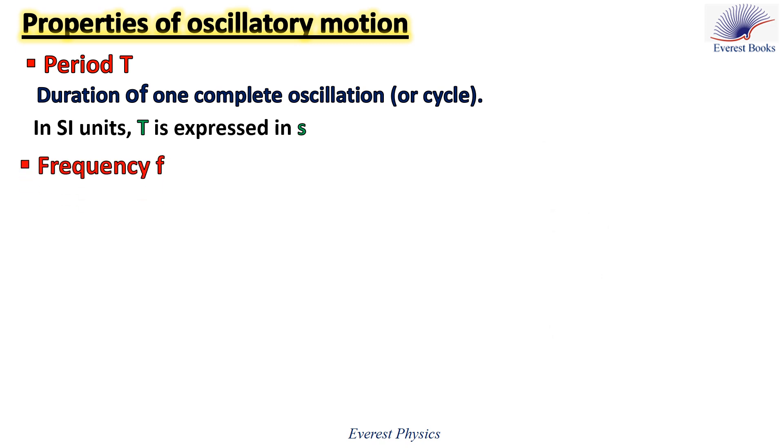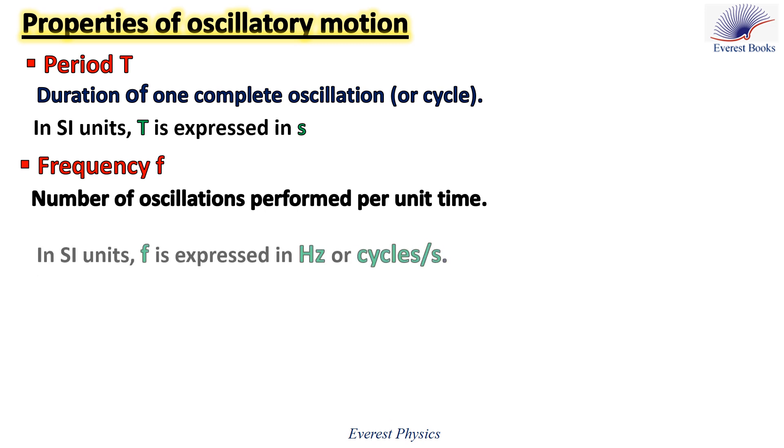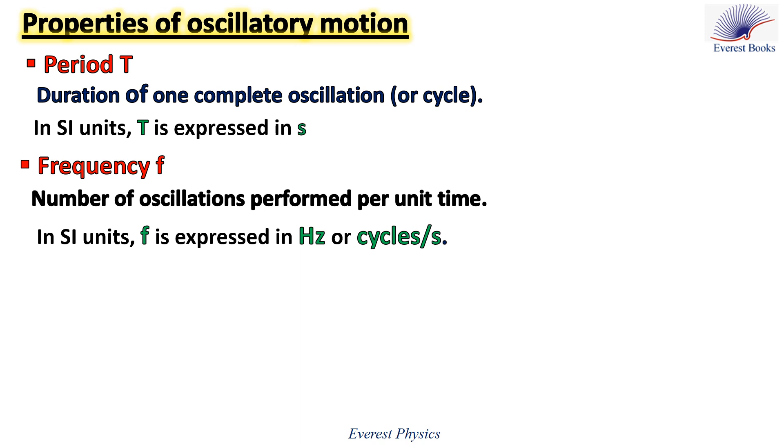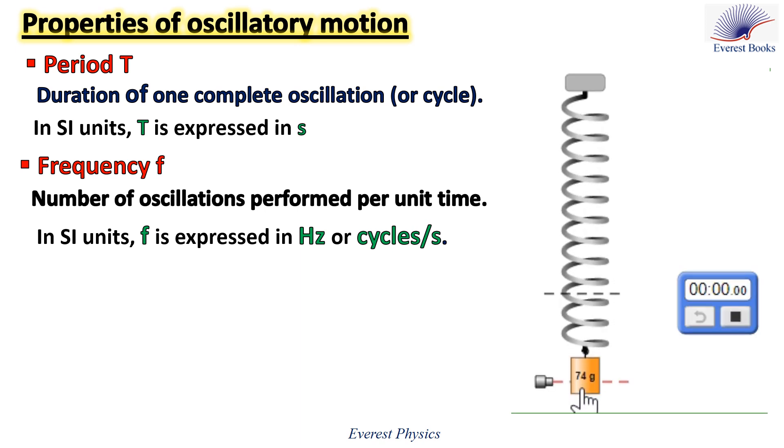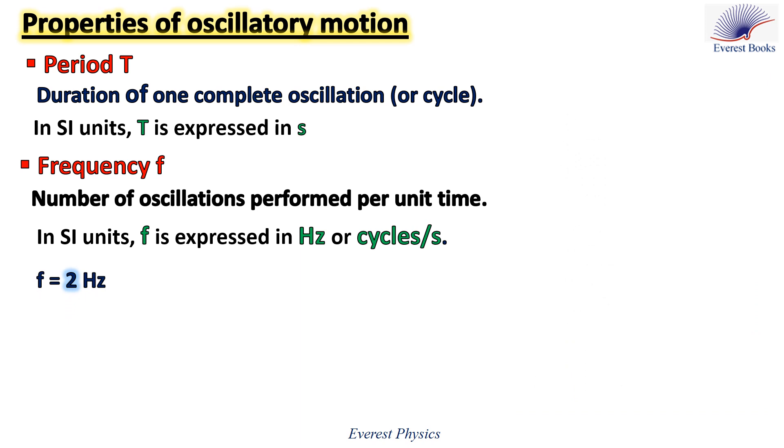The second property is the frequency which is the number of oscillations performed per unit time. The SI unit of the frequency is hertz or cycles per second. The block completes two oscillations or two cycles in one second. Then the frequency is two cycles per second or two hertz. But one over T equals one over 0.5 which equals two. Then F equals one over the period.